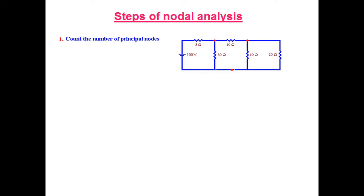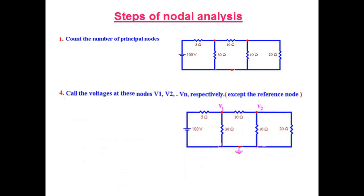Now, what are the steps that we follow? First of all, we find all the nodes. So in this case we have three nodes: one, two, and three. Then we put one of the nodes as a ground node — generally the one at the bottom is taken. So we have taken this as a ground node, and the other two nodes are named as V1 and V2. Node 1 and node 2 have the voltages V1 and V2.